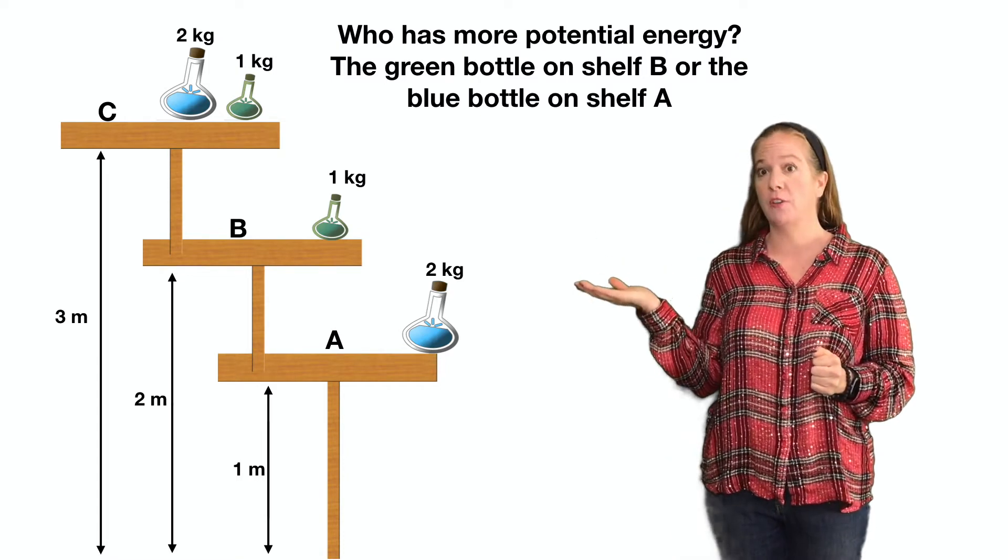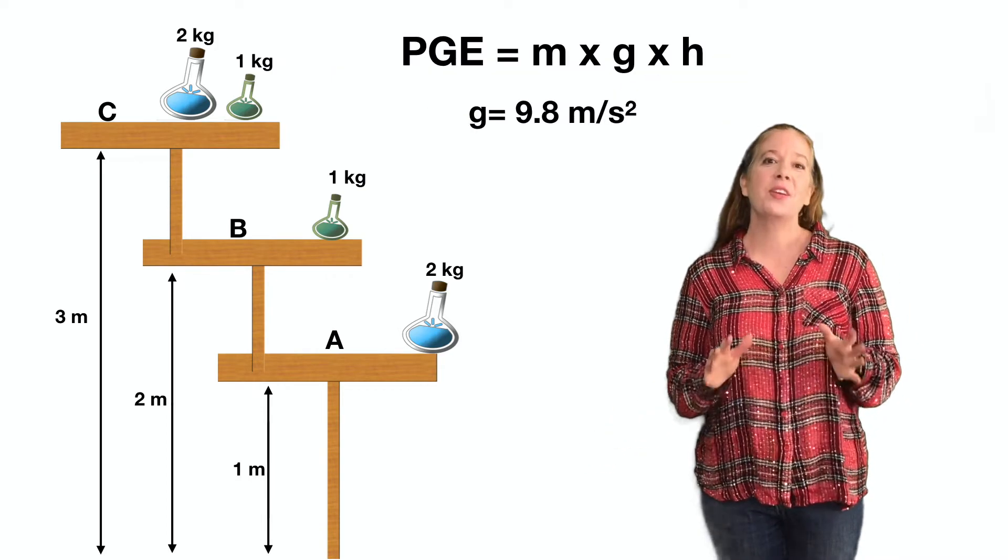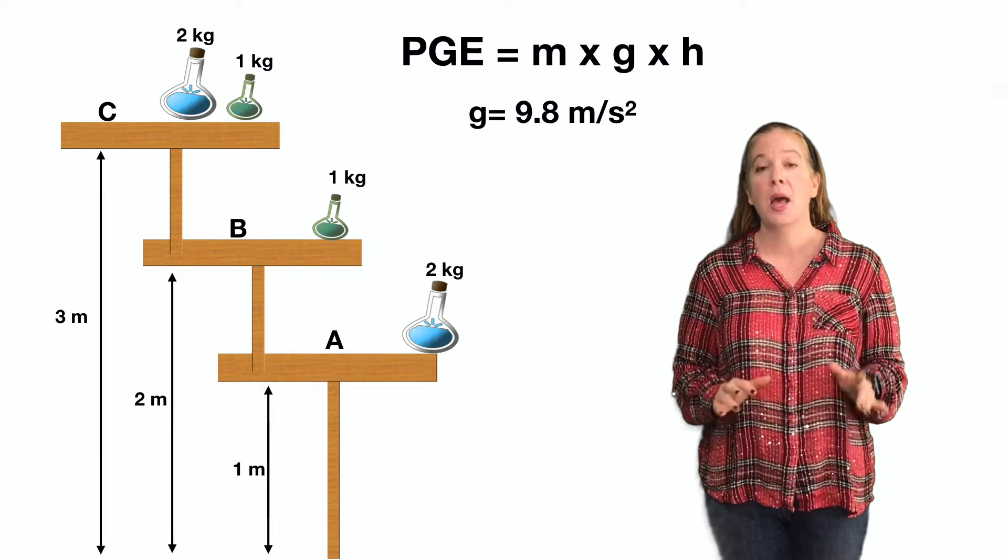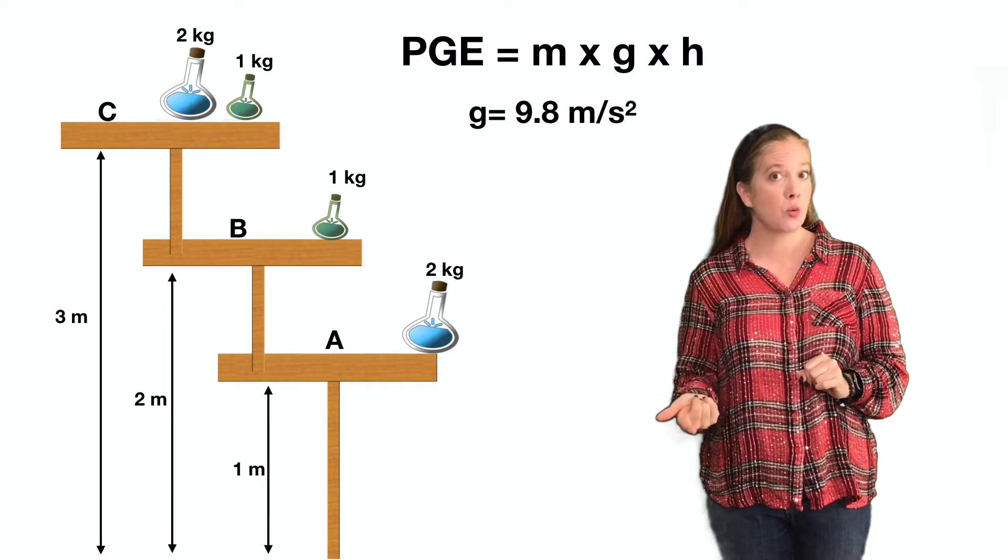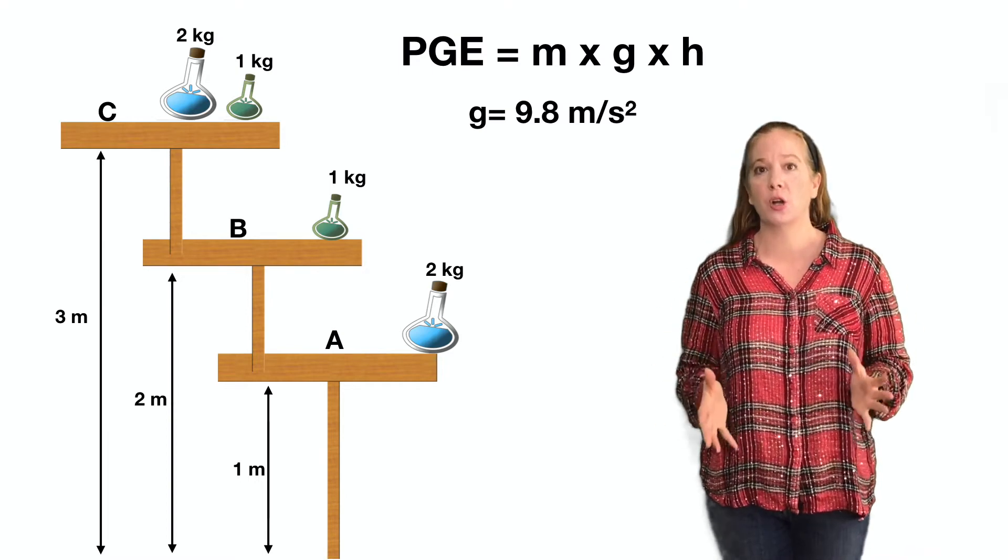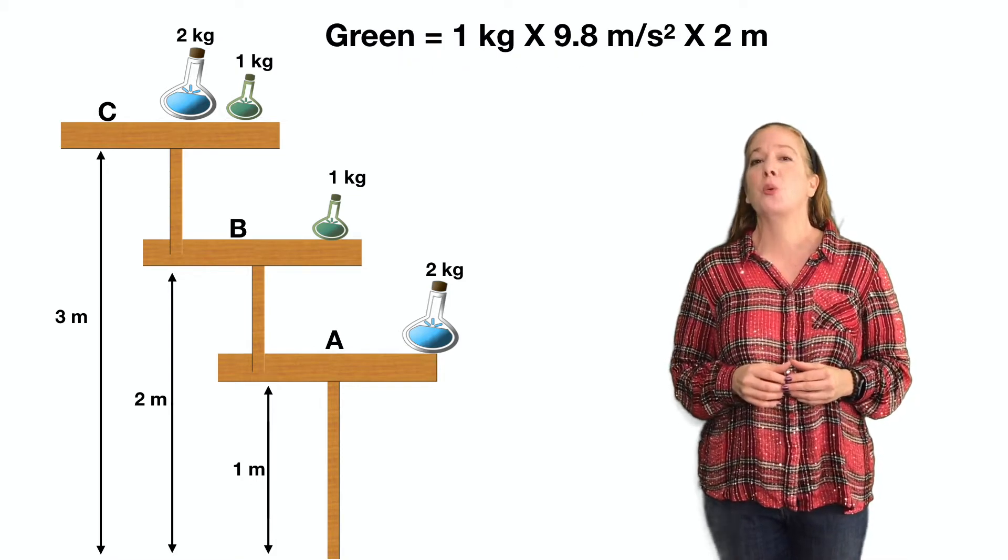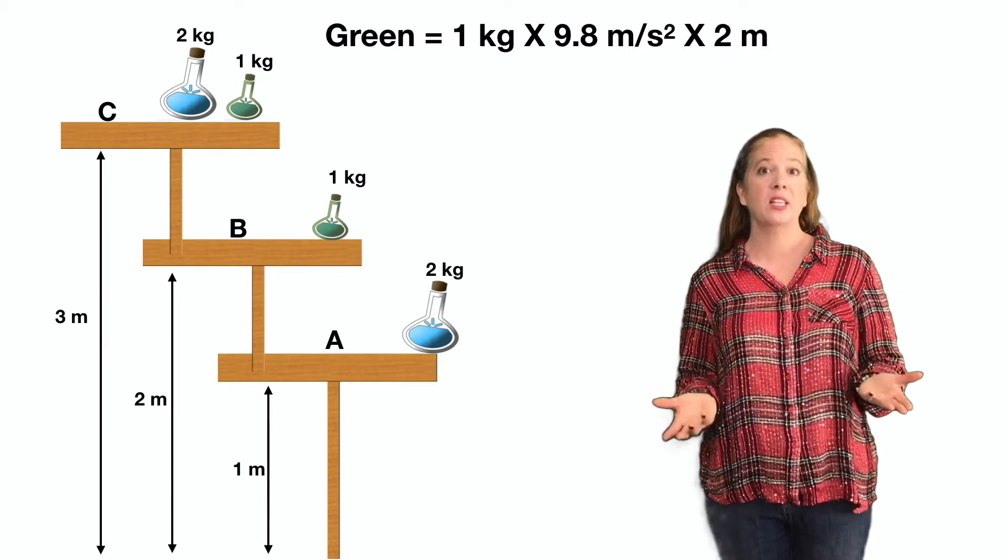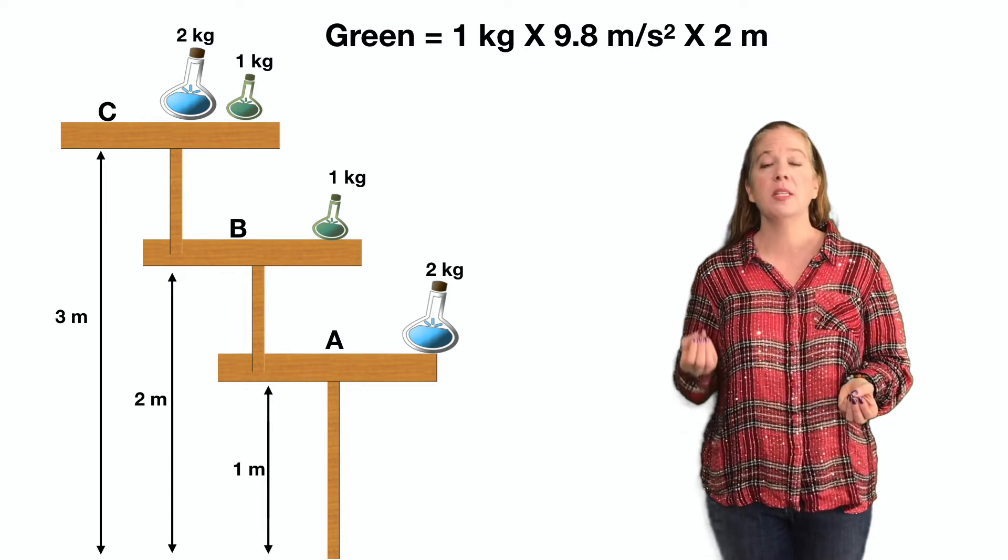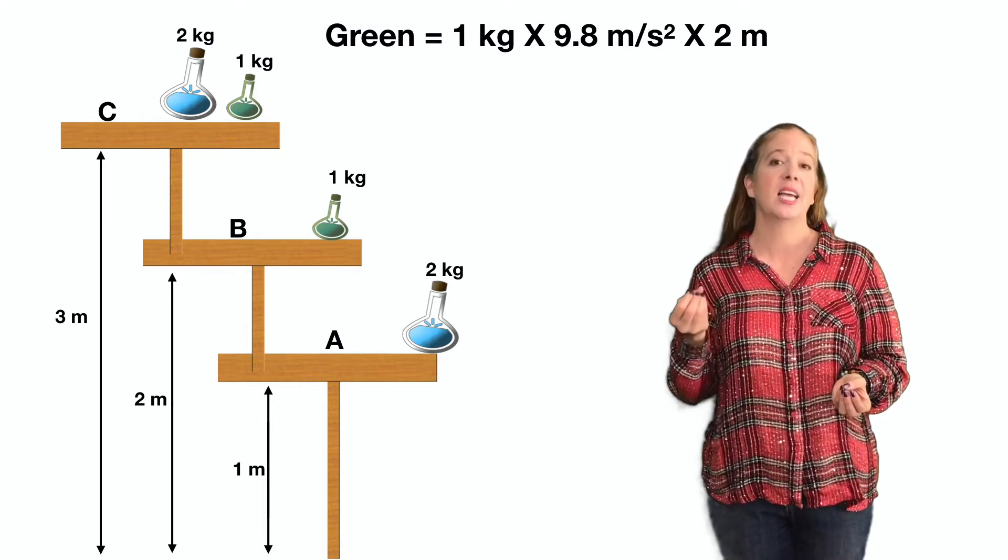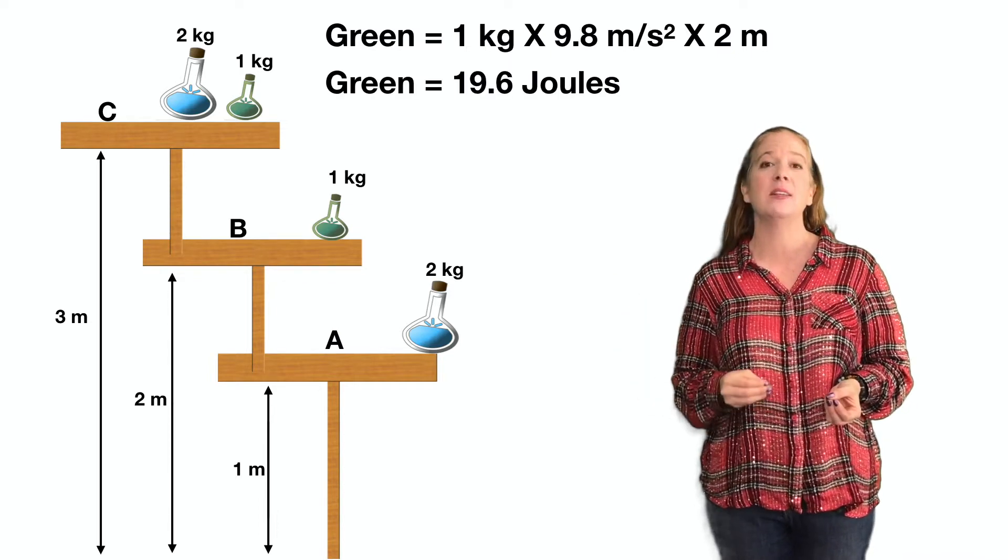Who has more potential energy? The green bottle on shelf B or the blue bottle on shelf A? To figure this out, we need to use the formula: potential gravitational energy equals mass times gravity times height, where gravity on Earth is a constant 9.8 meters per second squared. If the green bottle has a mass of 1 kilogram and a height of 2 meters, we'll plug that into the formula so that 1 kilogram times 9.8 meters per second squared times 2 meters, and that's going to give us a total energy of 19.6 joules.